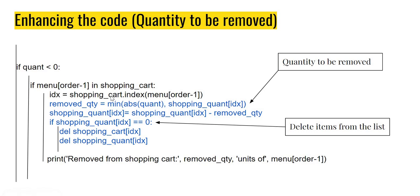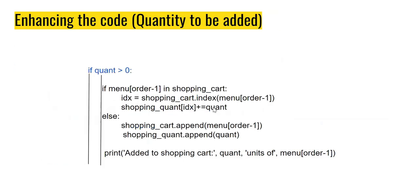Inside the `if quant < 0` branch, I again have to determine if this particular item is in the shopping cart, and if it is, find where it is — which is what the index lookup line does. Then I can't just blindly remove the quantity requested, because I want to make sure the final quantity doesn't become less than zero.